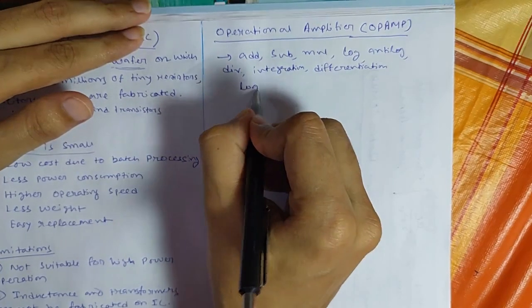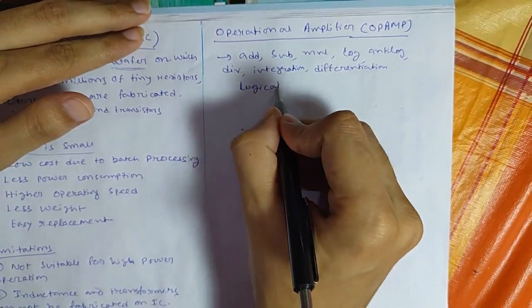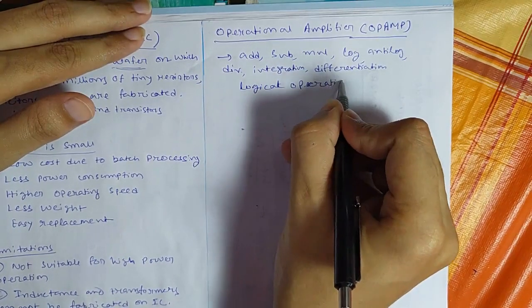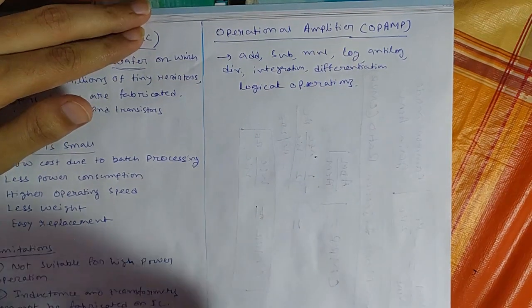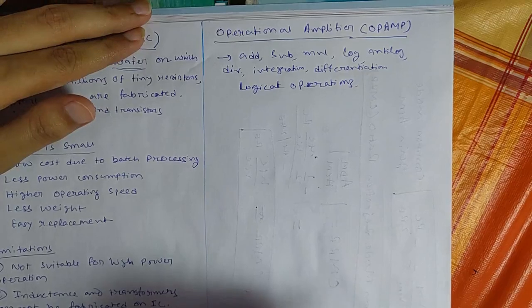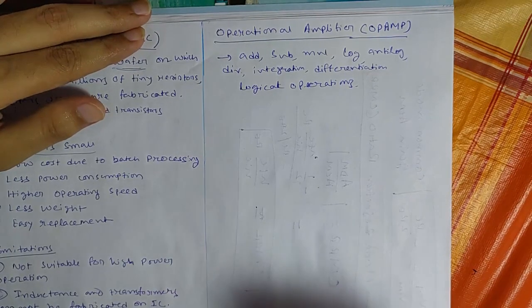So we can easily do this kind of operation. So logical operations. So it can perform various kind of arithmetic and logical operations in analog signals. So that's why it is known as operational amplifier.